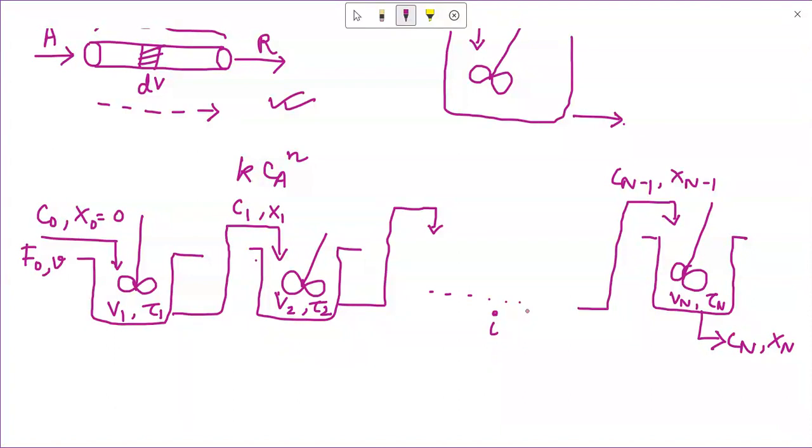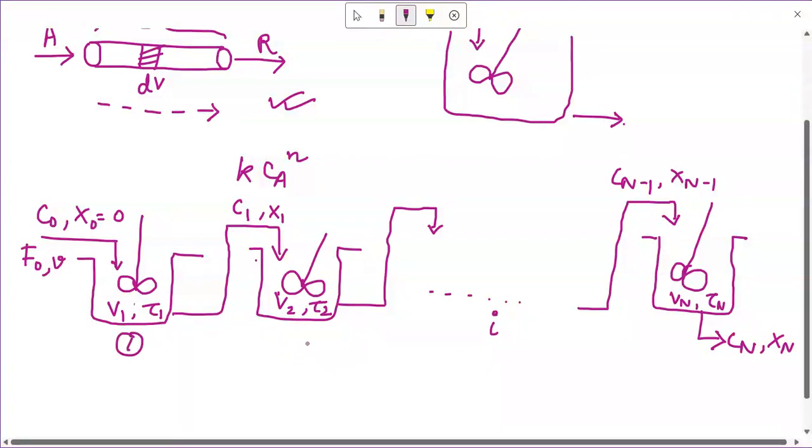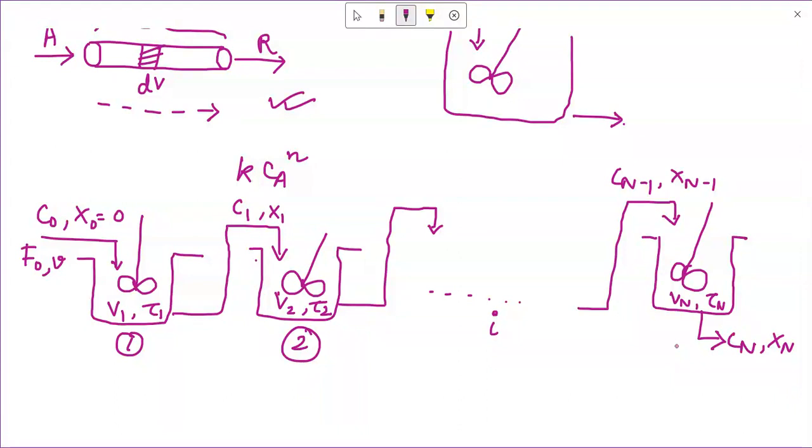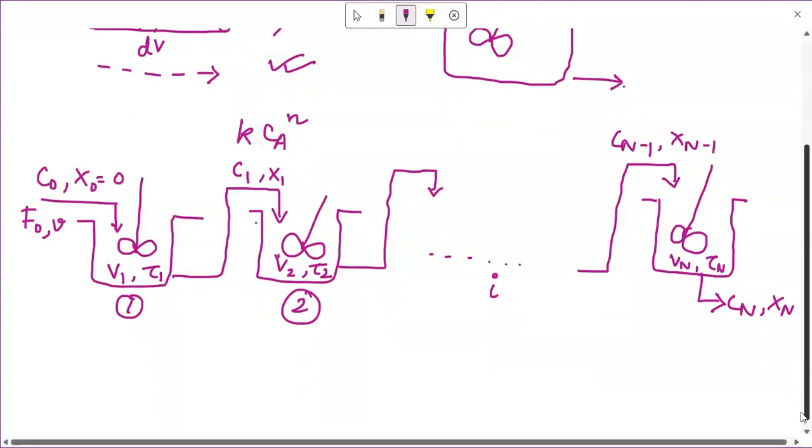Through each of these reactors, the concentration is uniform for each reactor, but there is a change in the concentration of the reacting fluid as it moves from one CSTR or mixed flow reactor to the next. I am calling it CSTR because it is a continuous stirred tank reactor. Through each reactor, the concentration within each reactor is uniform. But overall, if you see, there is a variation in the concentration as the reacting fluid moves forward through the series. And this can be shown as a stepwise representation.